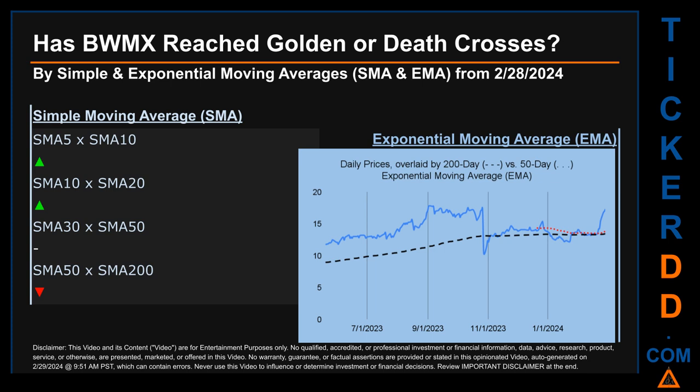The 50-day EMA line in red crossed above or below the 200-day EMA line in black. If no crossing can be seen, then no signal could be had. The blue line is daily end-of-day prices. For simple moving average, comparing 50 to 200 days, we found a bearish death cross signal because the 50-day SMA crossed below the 200-day. Continuing with SMA across the 5-to-10 and 10-to-20 day ranges, we found a golden cross signal. For the 30-to-50 day range, we could find neither golden cross nor death cross signal.